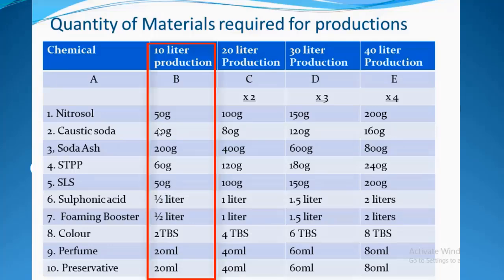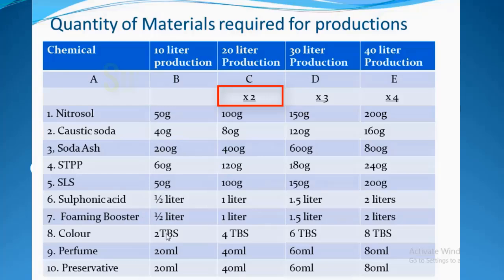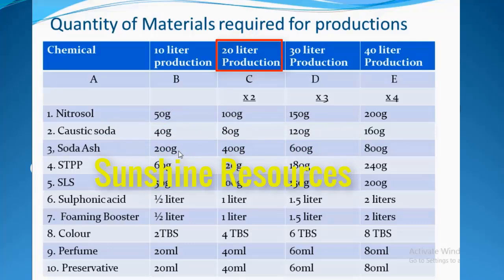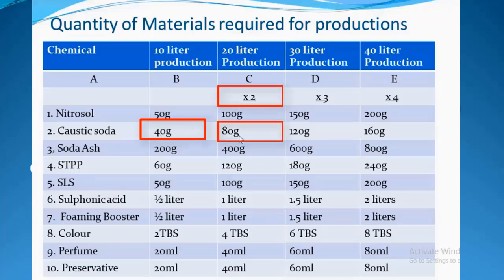If you want to produce 20 liters of liquid soap, all you do is multiply the quantities in column B by 2. For example, to produce 20 liters, multiply nitrosol — which is 50g — by 2 to get 100g. For caustic soda, to produce 10 liters I need 40g, but to produce 20 liters I multiply 40 by 2 to get 80g. For soda ash, multiply 200g by 2 to get 400g.